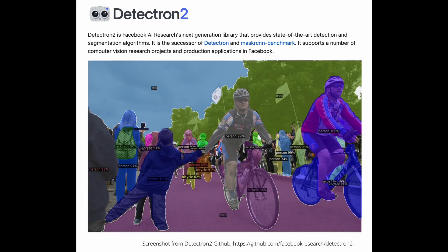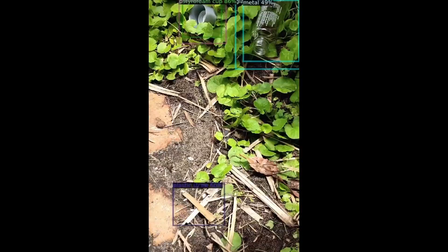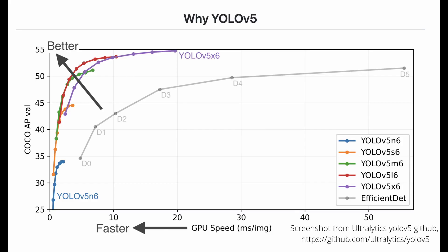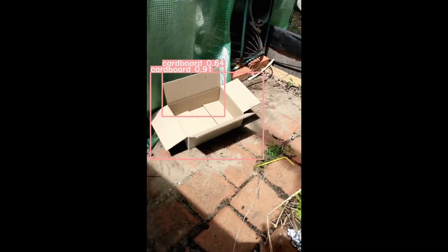I trained my model using two different libraries of the PyTorch framework. The first is Detectron2 and the second is YOLOv5. Detectron2 provides a Faster R-CNN pre-trained model, which offers more accurate inferencing performance at the cost of a slower frame rate. On the other hand, YOLOv5 provides smoother frame rates at the cost of slightly worse performance.